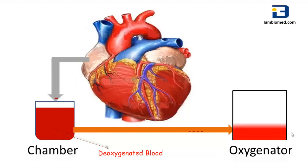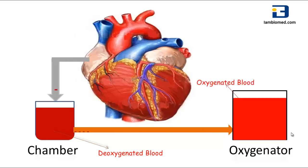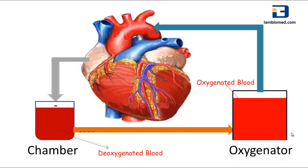This blood is then pumped by the machine to an oxygenator. The oxygenator removes carbon dioxide and adds oxygen, which is the function of the lungs. Another tube is connected to the aorta, and the machine pumps the oxygenated blood back to the body, which is the function of the left part of the heart.